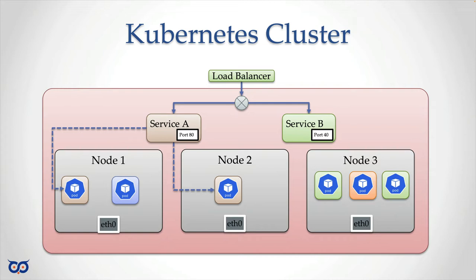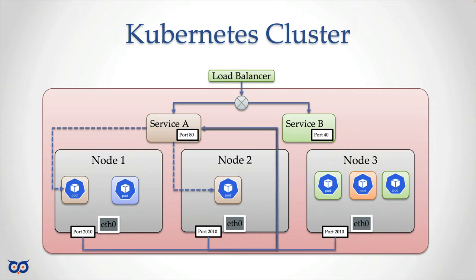What is a NodePort? If service A uses type NodePort instead of the default ClusterIP, what we're saying is that we want a port open on every single node in our cluster. That's why you see port 2010 on all three of my nodes. It doesn't matter if, say, node 3 doesn't have a pod for service A — a pod could end up there anyway. NodePort configures a port on every node to forward traffic back to that service.